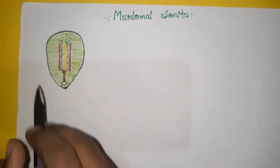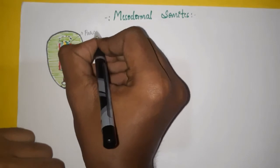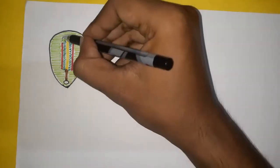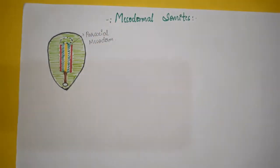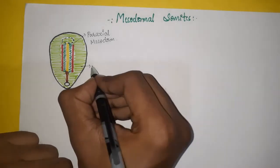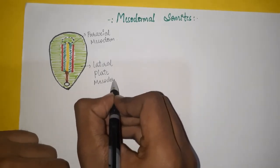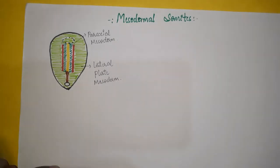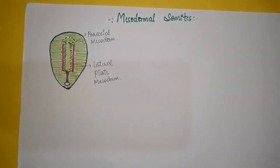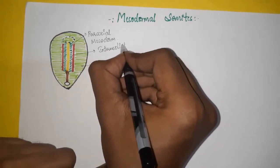The mesodermal part which lies on the sides of the notochord is called paraxial mesoderm. 'Para' means side, 'axial' means axis — this is the midline. The mesoderm present on the sides of the midline is paraxial mesoderm. The lateral-most part of mesoderm is the lateral plate mesoderm. And finally, the mesodermal part which lies between the paraxial mesoderm and lateral plate mesoderm is called intermediate mesoderm.